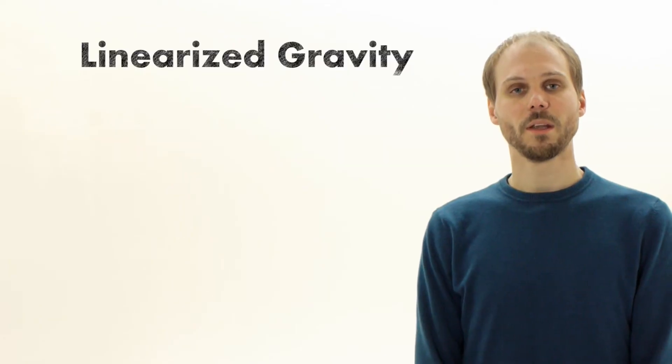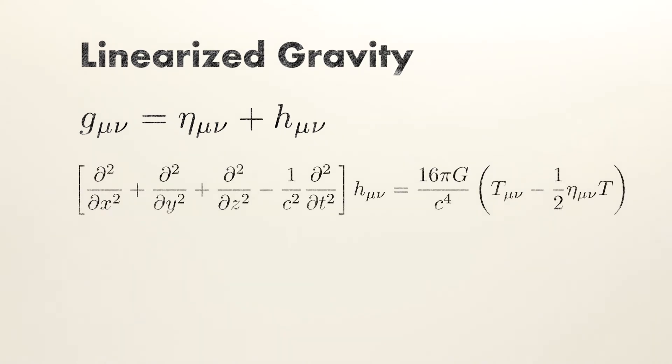We used the framework of linearized Einstein gravity, where it is assumed that the spacetime metric g only differs by a small perturbation h from the background metric. We assume the background to be that of flat spacetime. We solved the resulting equations analytically.